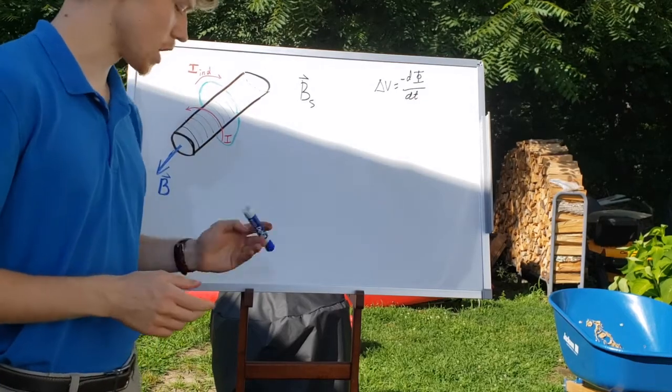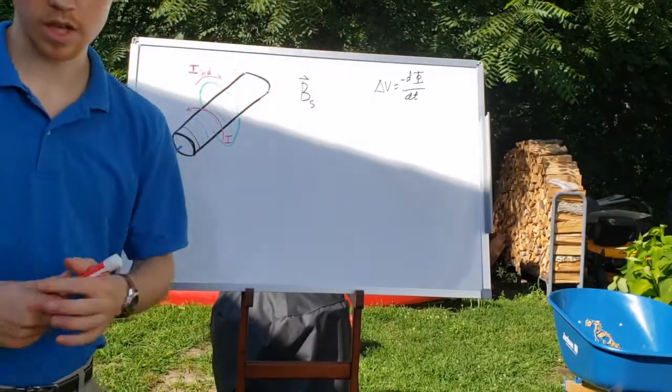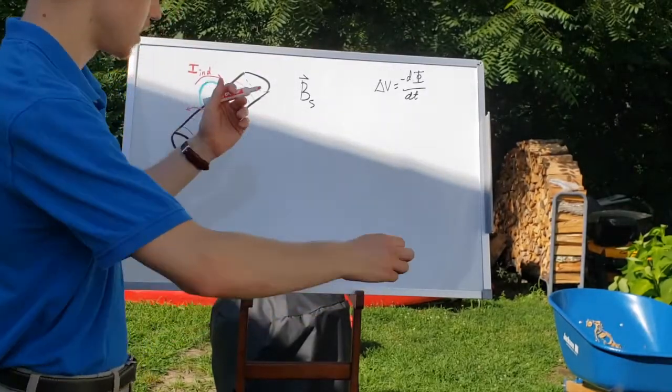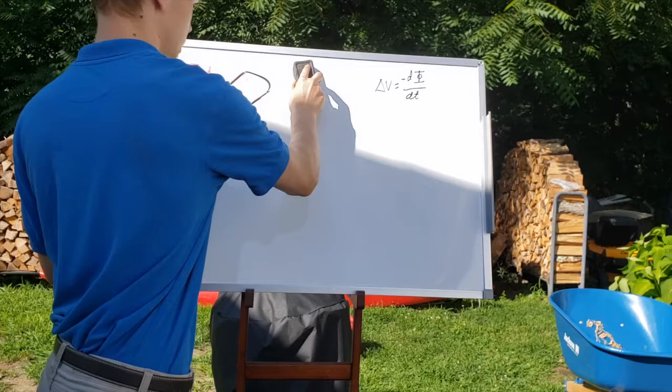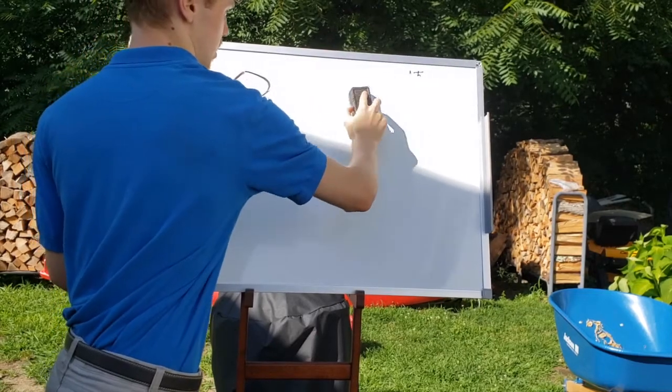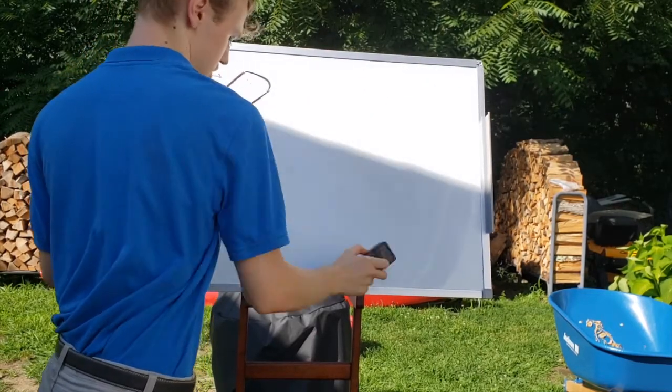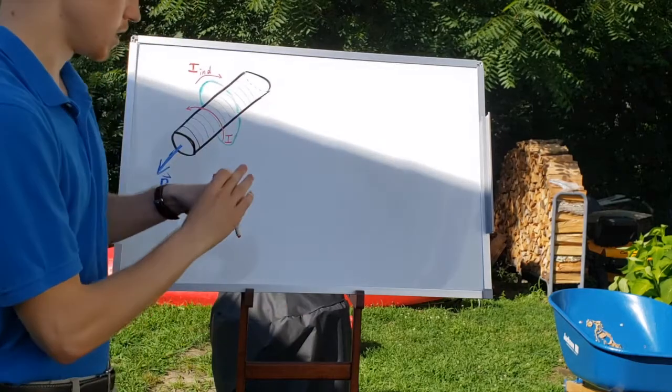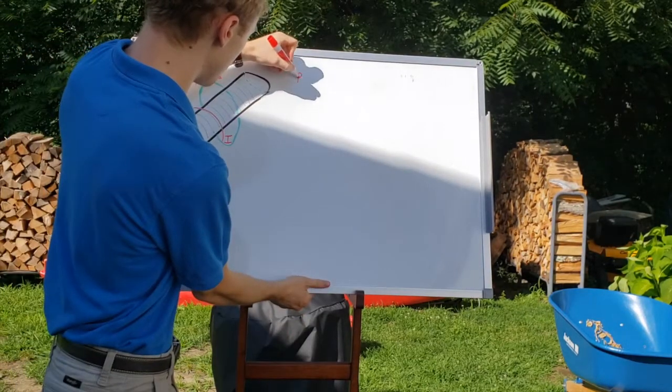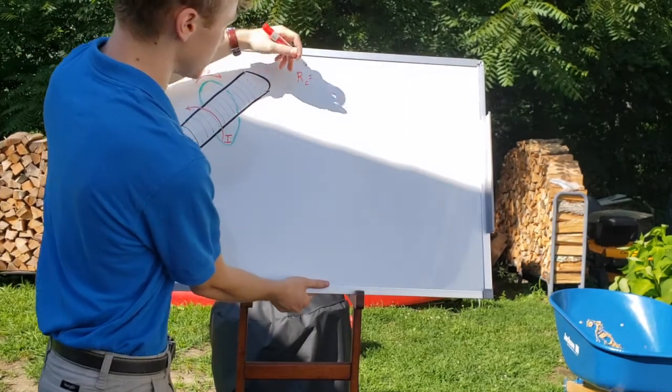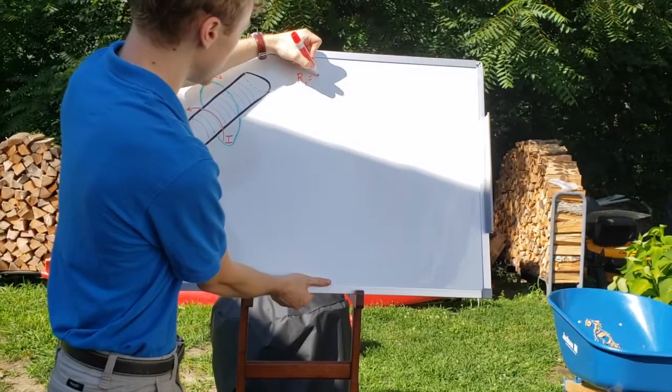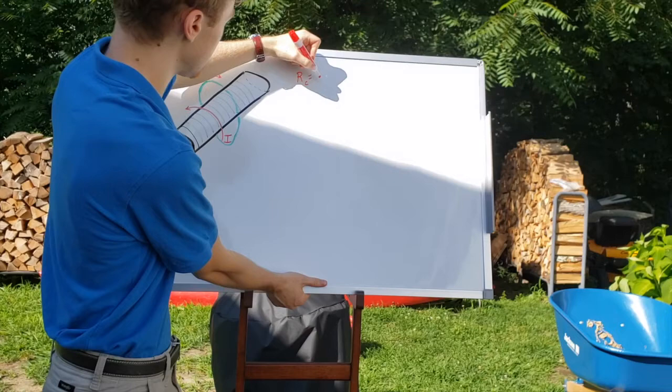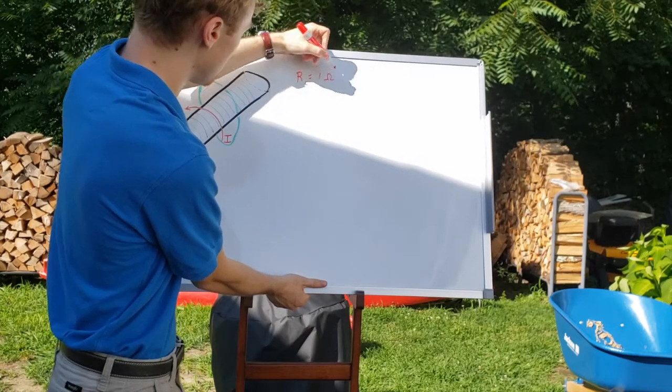So we're given a couple constants in the problem. I'm going to put those in red. Let me go ahead and erase this here to give us some more space. I'd like to keep this picture up if possible. So we're told that the resistance of the coil—I'll say C is the coil and S will be the solenoid. So resistance of the coil is one ohm.